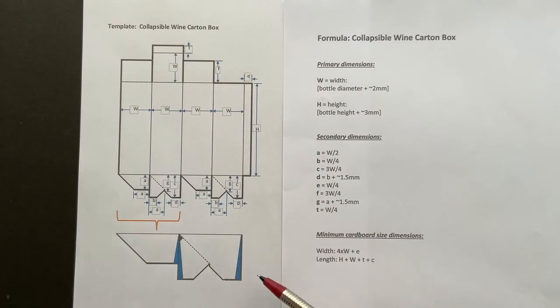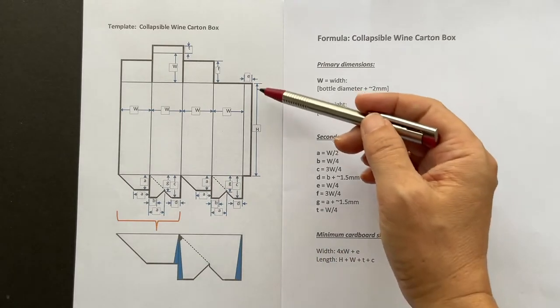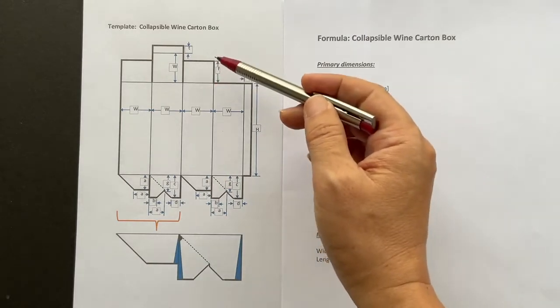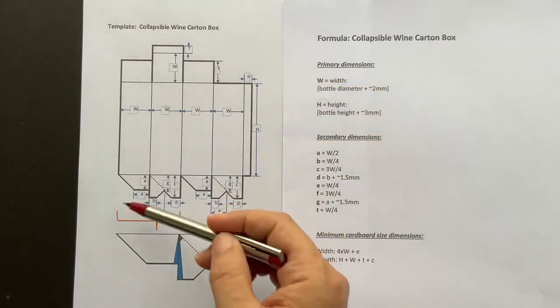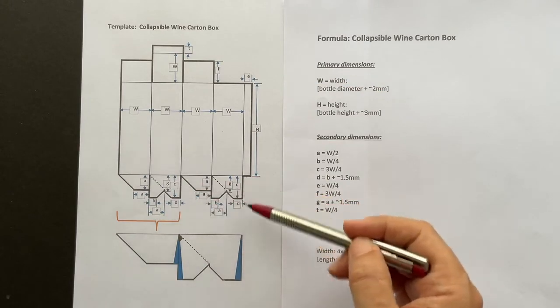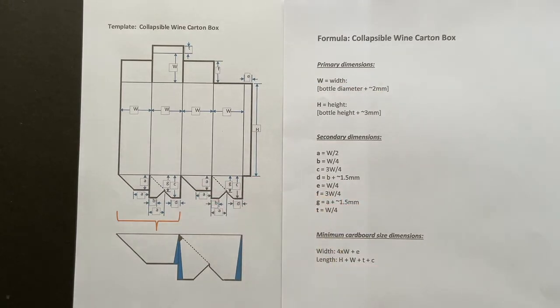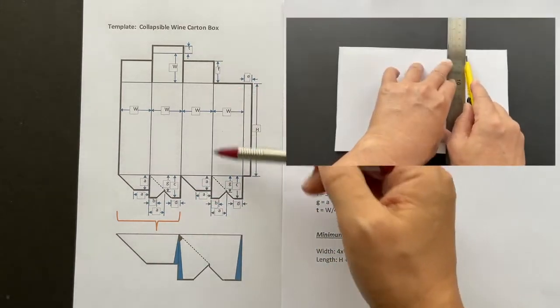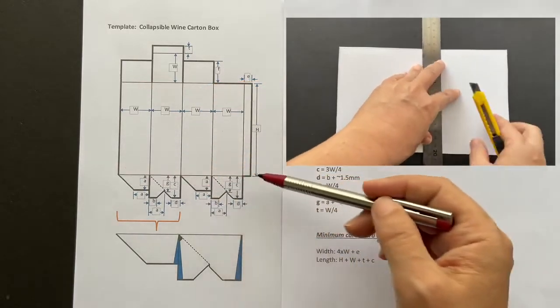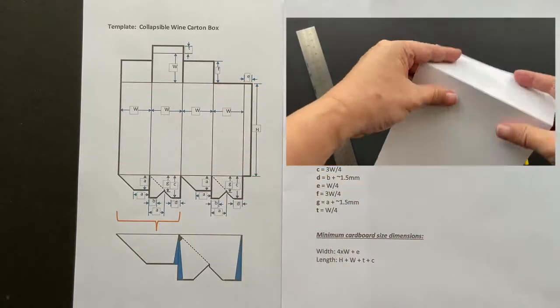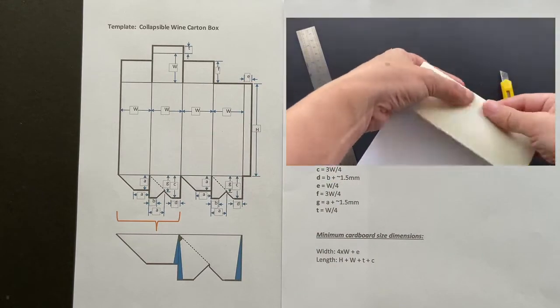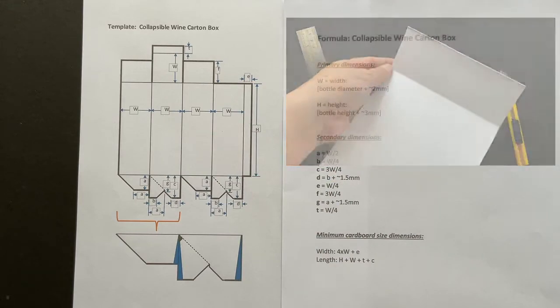This is a zoomed out view of the bottom flaps of the box. These thick lines in the template are cut through lines, while the thin lines are folding lines. As shown in the inset video, score a shallow cut along the folding line so that it can fold correctly later on.